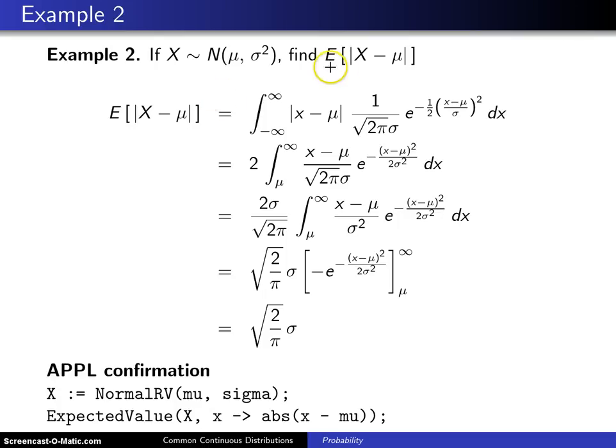So to start out, the derivation of this quantity, the expected value of the absolute value of x minus mu is the integral from minus infinity to infinity, which is the support of the random variable x of just x minus mu multiplied by the probability density function of a normal. So this first step here is by the definition of the expected value operator.